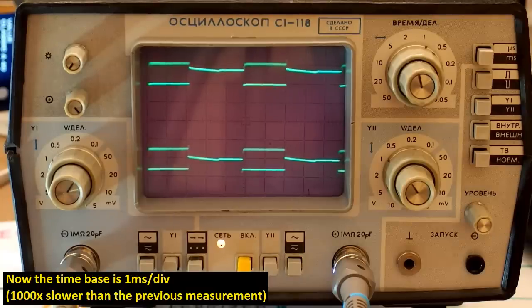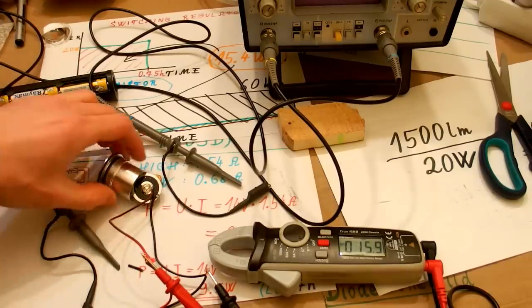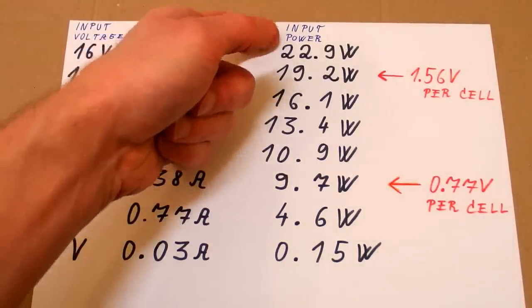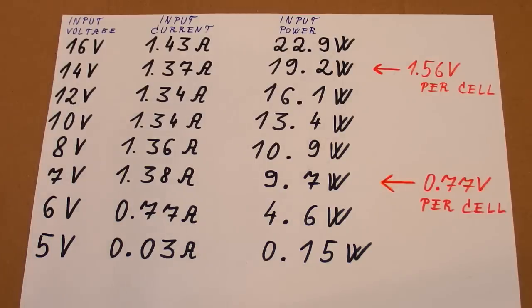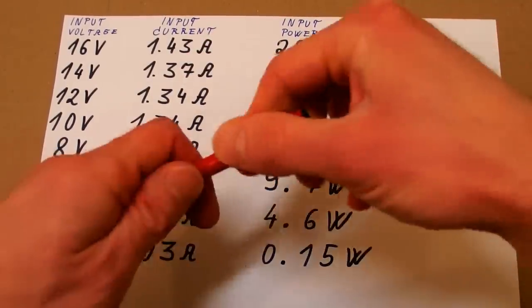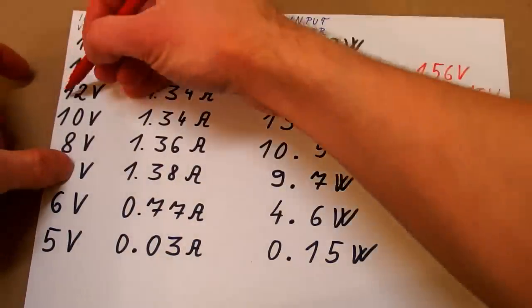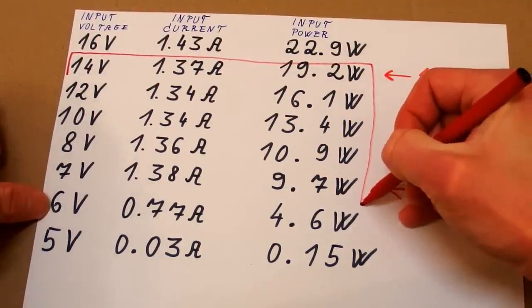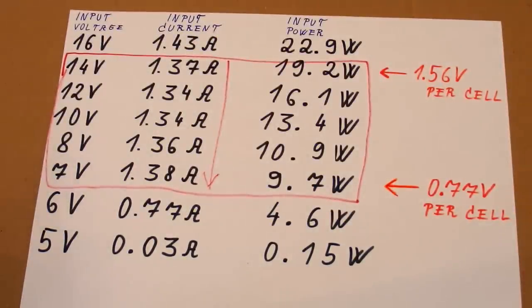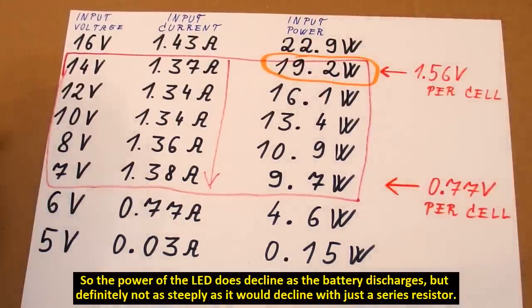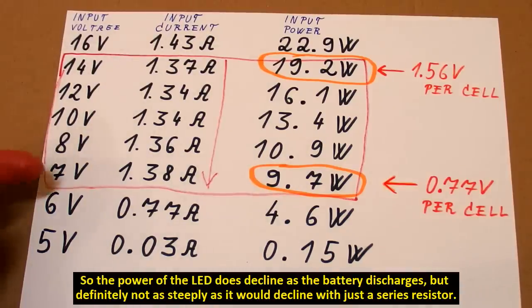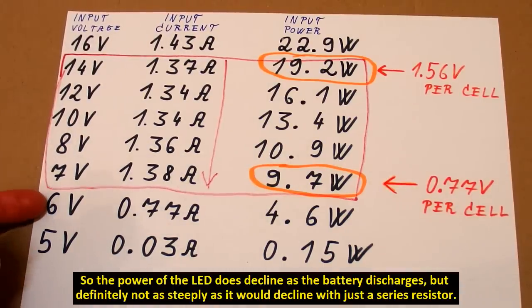Now let's measure how the input current changes with the input voltage. So here you can see the input voltage versus the input current and the input power. And it seems like it's not a constant power or constant output current. It seems like a constant input current. The input current doesn't change much in the normal range of operating voltages. With fresh batteries it's about here and when the batteries are almost flat it's about here. And from here to here the current is almost constant. So the initial power is about 20 watts and at the end of the life of the batteries it's about 10 watts or half of it. At 7 volts it still keeps the constant current but at 6 volts the current significantly drops.